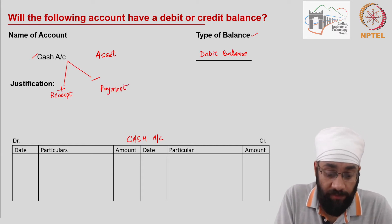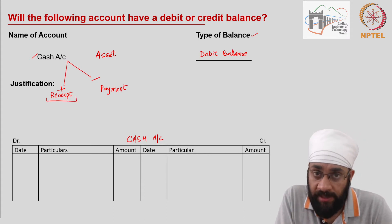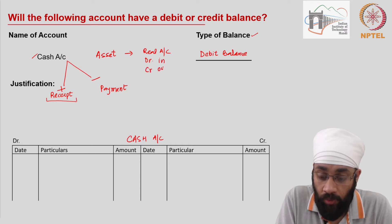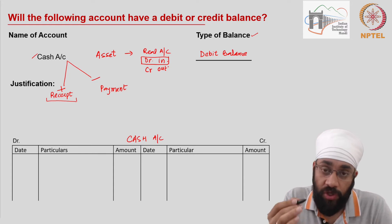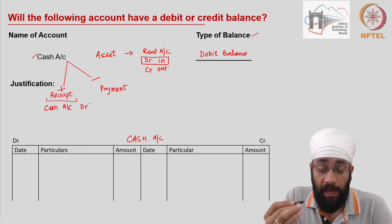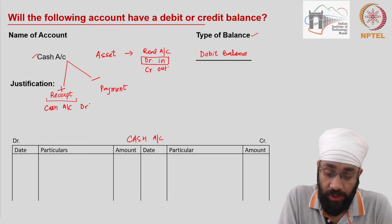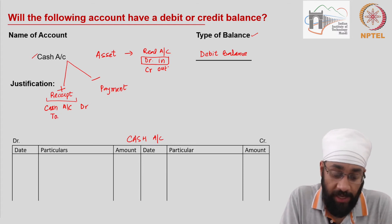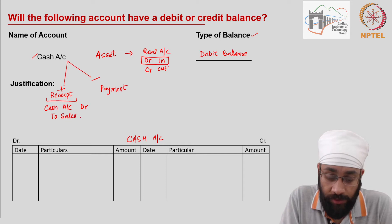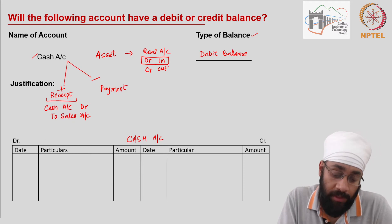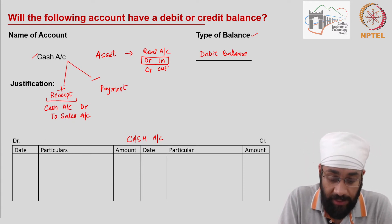Whenever you have a receipt, cash is an asset, and hence a real account. Whenever cash comes in, we say debit what comes in and credit what goes out. Therefore, whenever cash comes in, the journal entry is going to be cash account debit. The other account involved is going to be credited. Let's say cash is coming in because you are selling goods — so sales account. Sales account is an income, and income is nominal credit — all incomes and gains. Hence sales is credit.